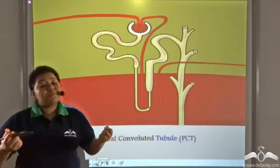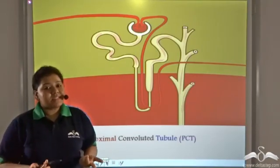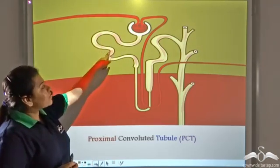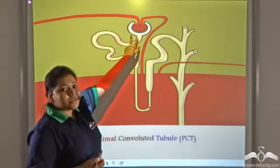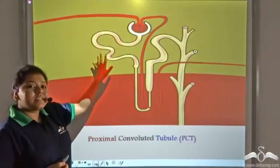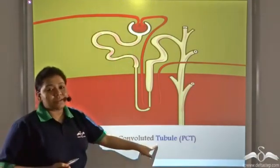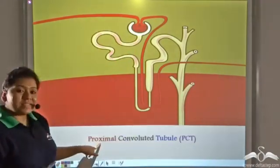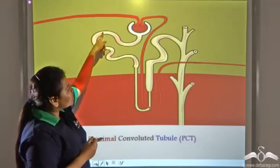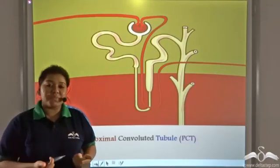For this reabsorption of food and minerals, greater surface area is required. That is why there is a convoluted tube-like structure post the Bowman's capsule. And since this coiled structure is present near the Bowman's capsule, it is known as proximal convoluted tubule. Proximal means near, convoluted means curved. It is a very twisted tube-like structure. So this is known as proximal convoluted tubule.